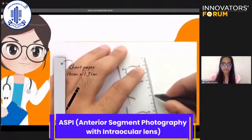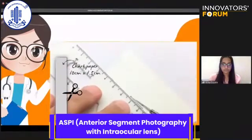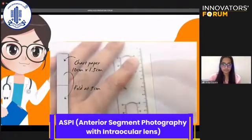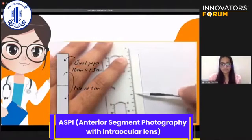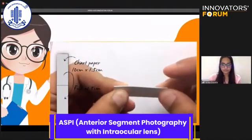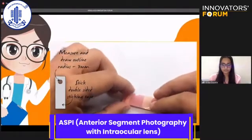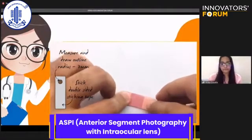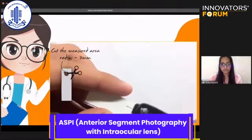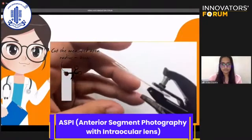Let me tell you how I made my ASP device. First, take a chart paper, a scale, and a pen to draw a rectangle measuring 10 centimeters by 1.5 centimeters. Cut it out with a scalpel, then mark the center part of the rectangle and fold it across. After folding, use double-sided tape on one side of the chart paper and stick it properly. Then use a puncher to punch a hole in the middle of the rectangle, making a small opening where we can attach the intraocular lens.